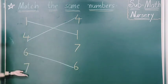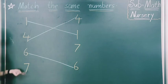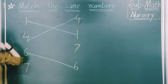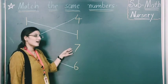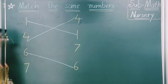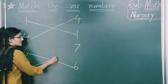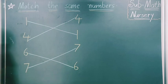Which number is this? 7 — number 7. Find it from there. This is number 7. So we have to match this to that — number 7. We have completed matching also.